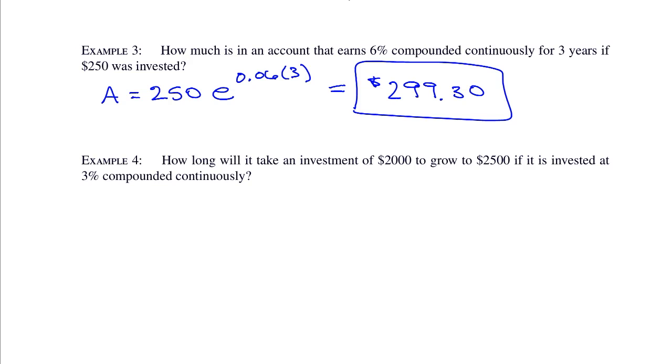Questions over that? Incidentally, how much interest did you earn in these three years? $49.30. The interest is the amount in the account minus your original investment, which is the principal.